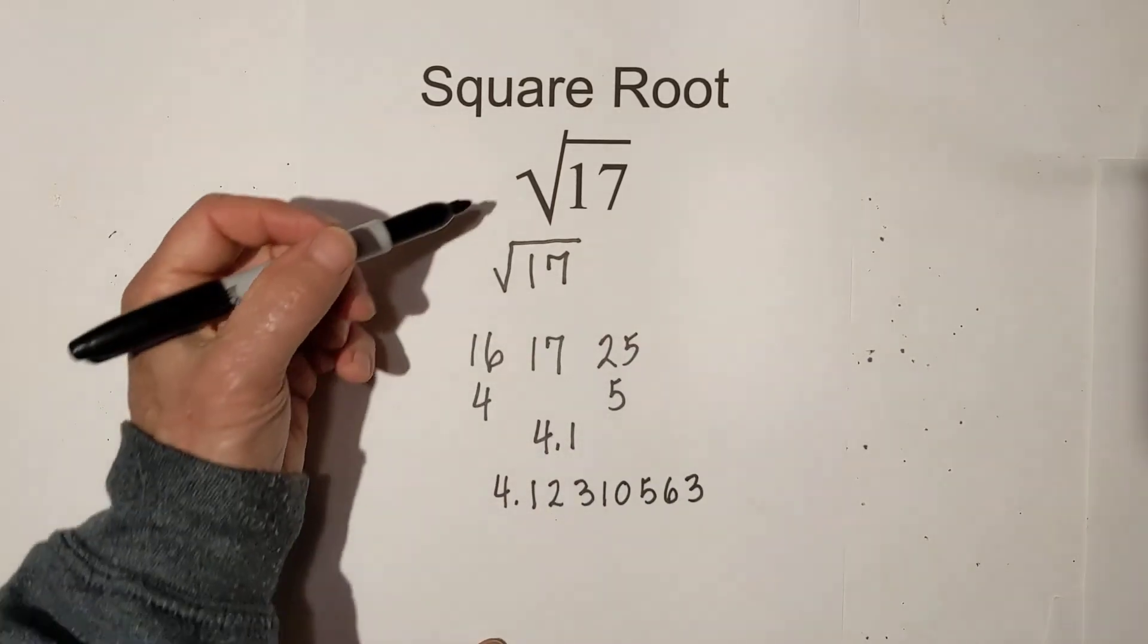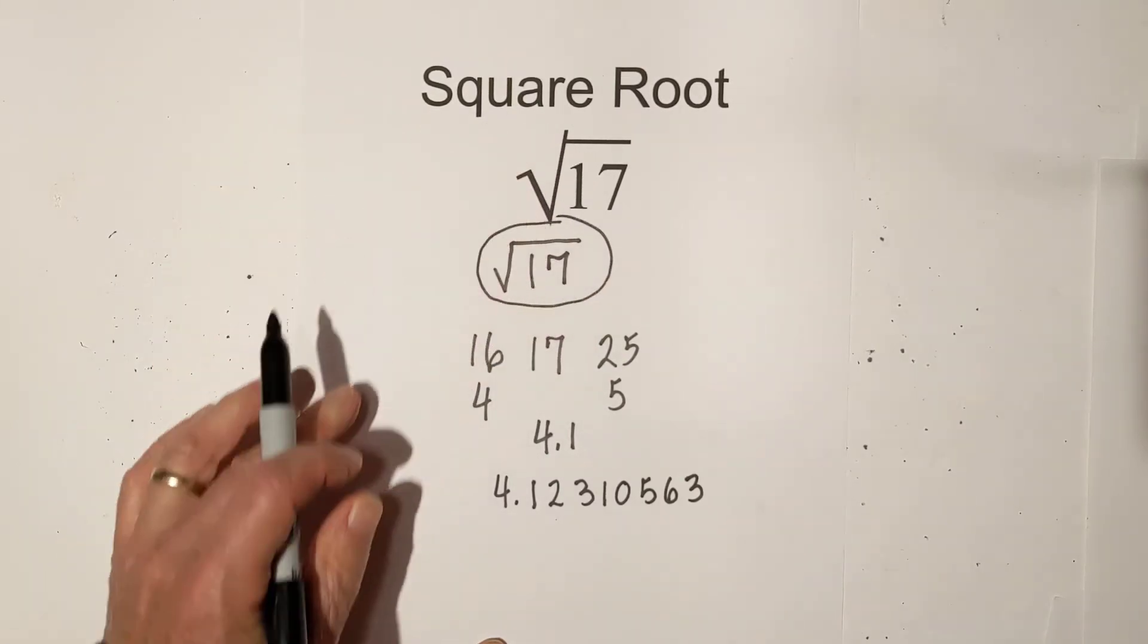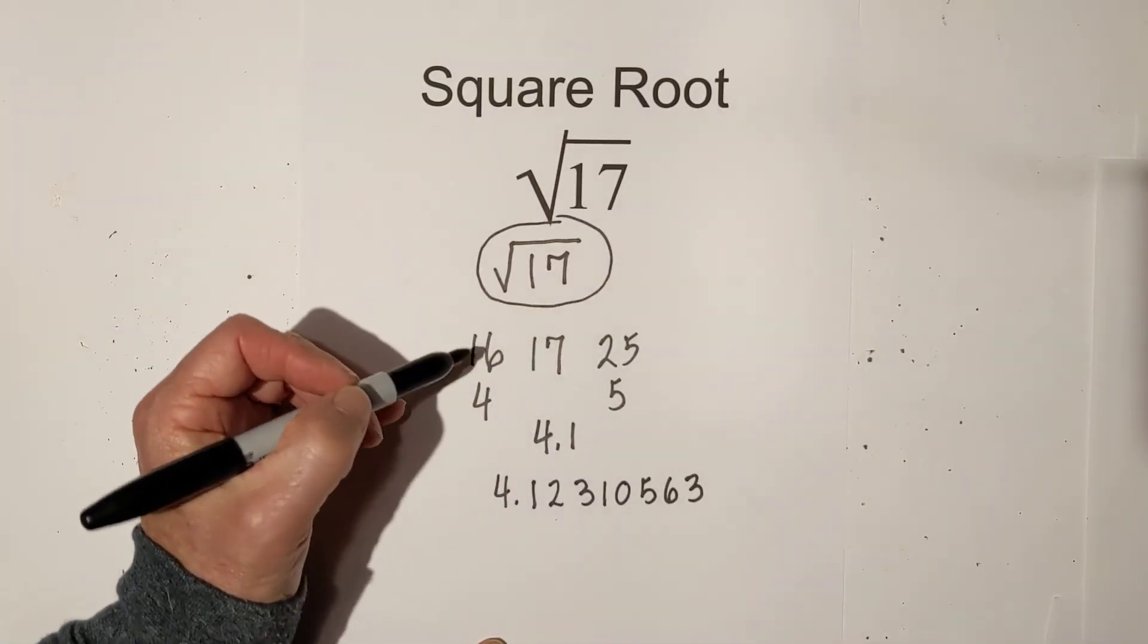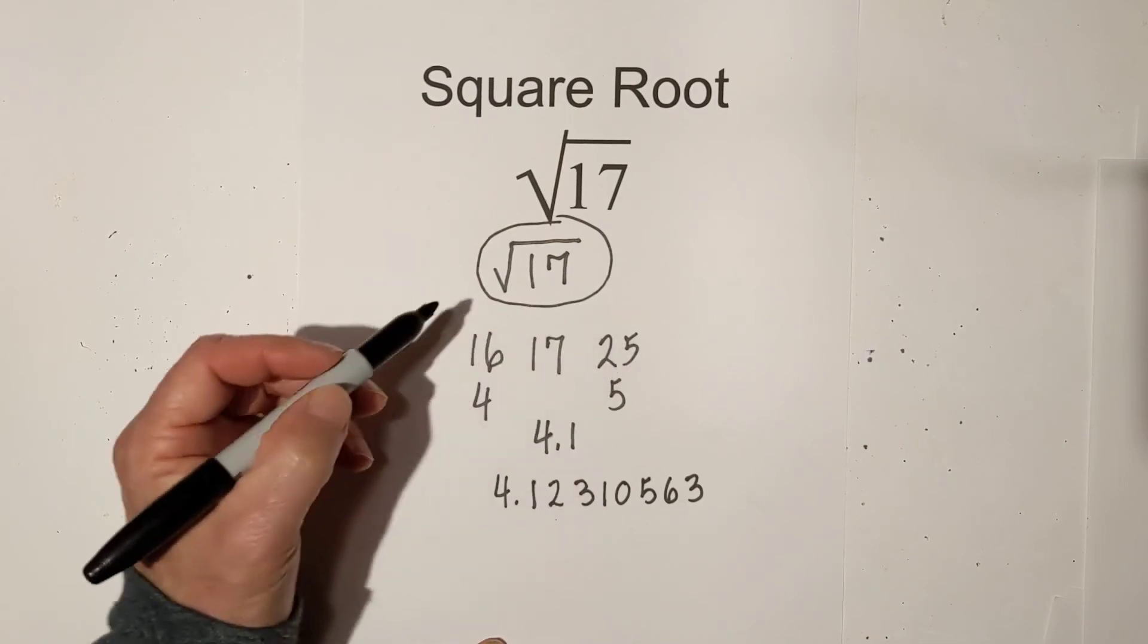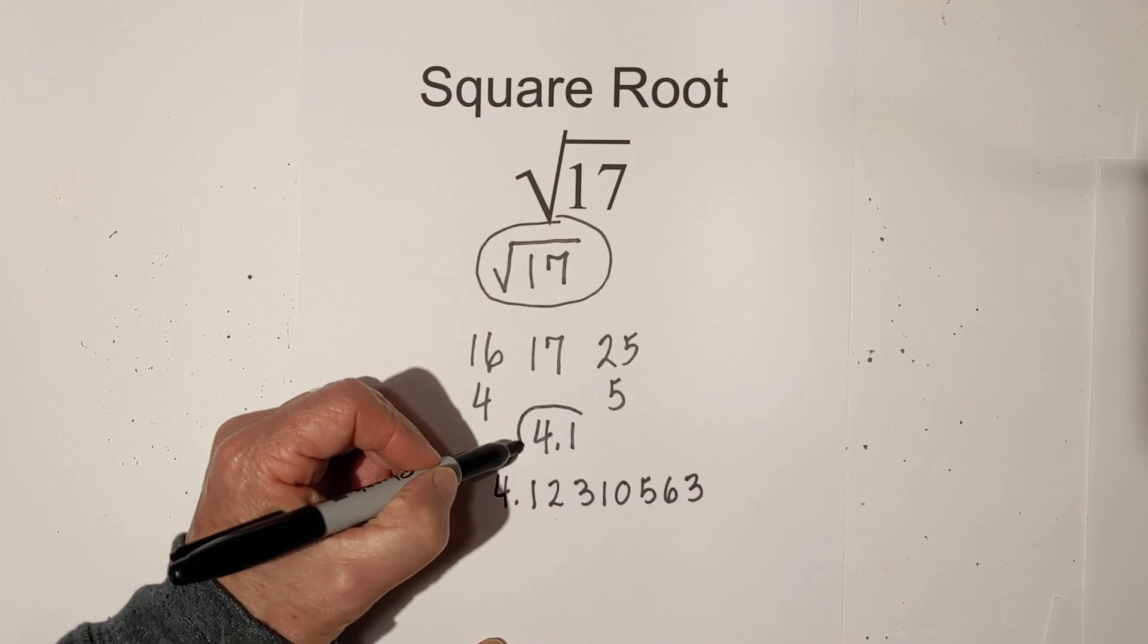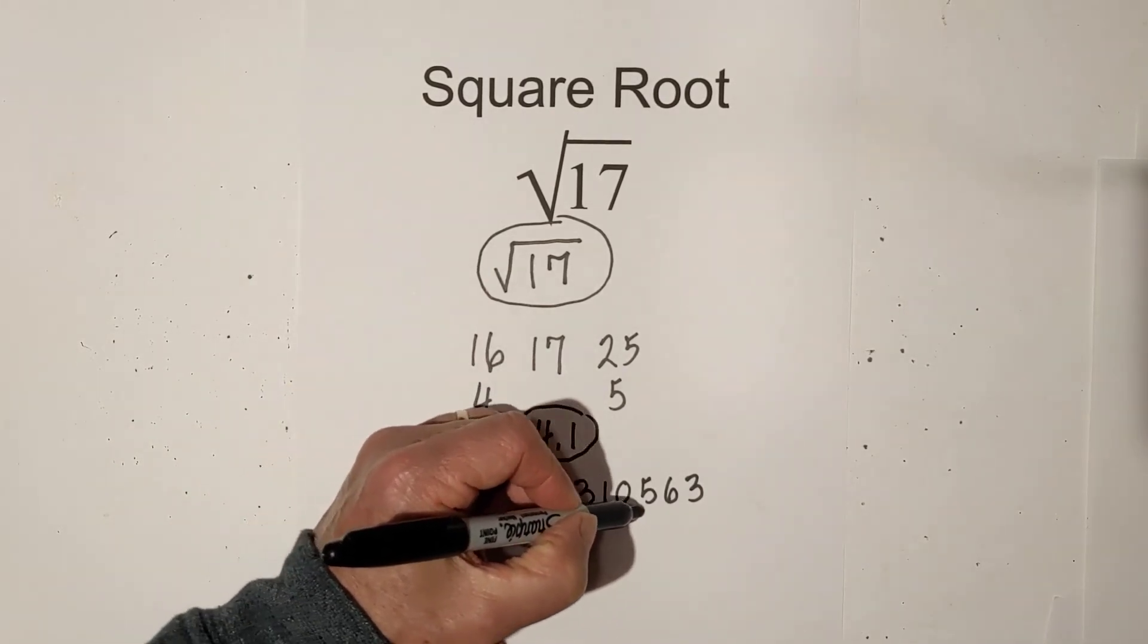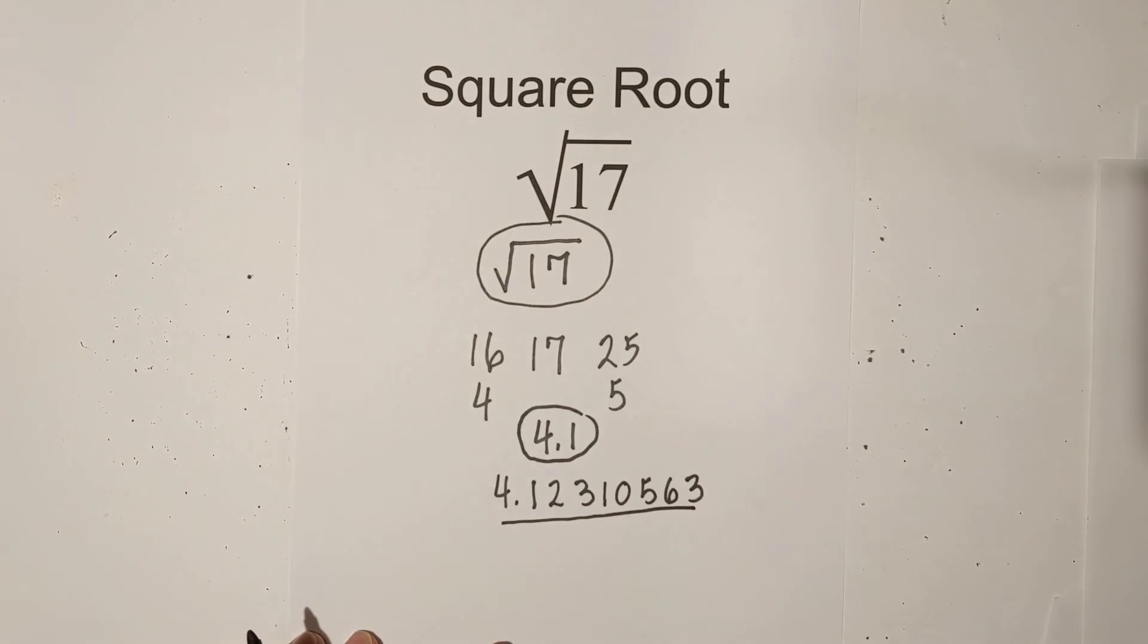So in summary, simplified, it is the square root of 17 because it is a prime number. If you want to estimate, you can use 16 and 25, which is 4 and 5, so you can estimate about 4.1. That will get you close, and then if you put it in a calculator, you're going to get this number right there.